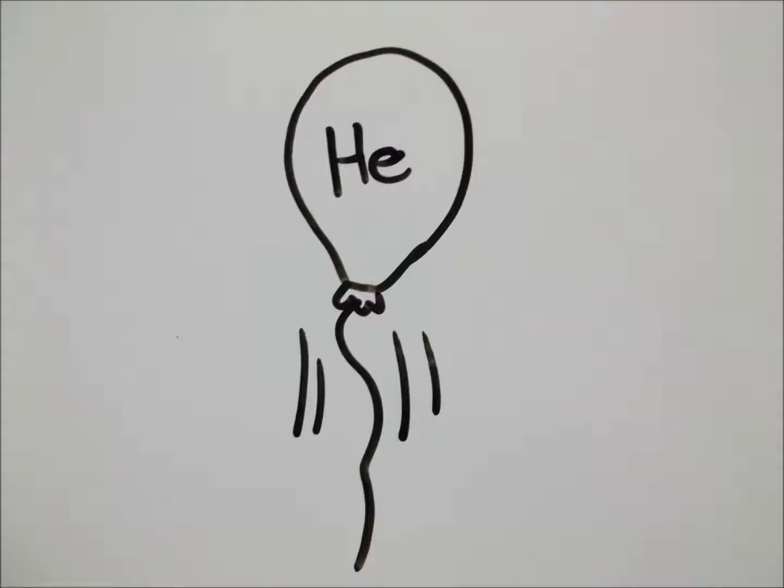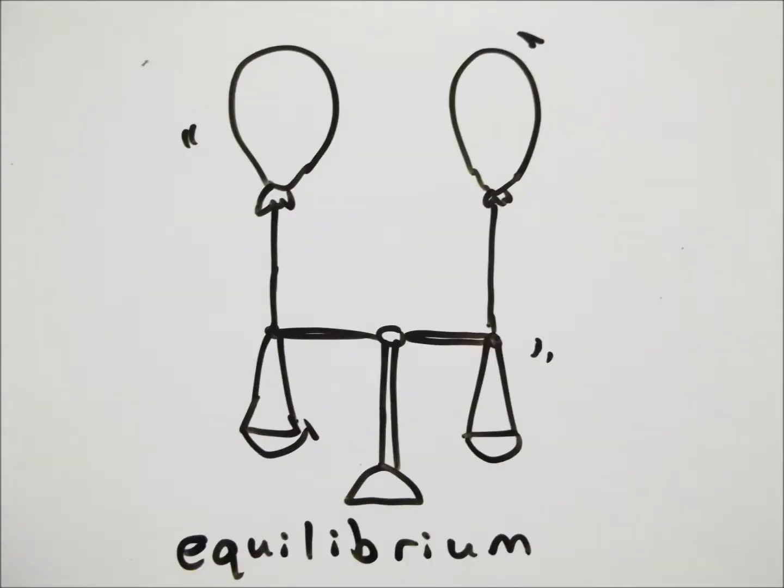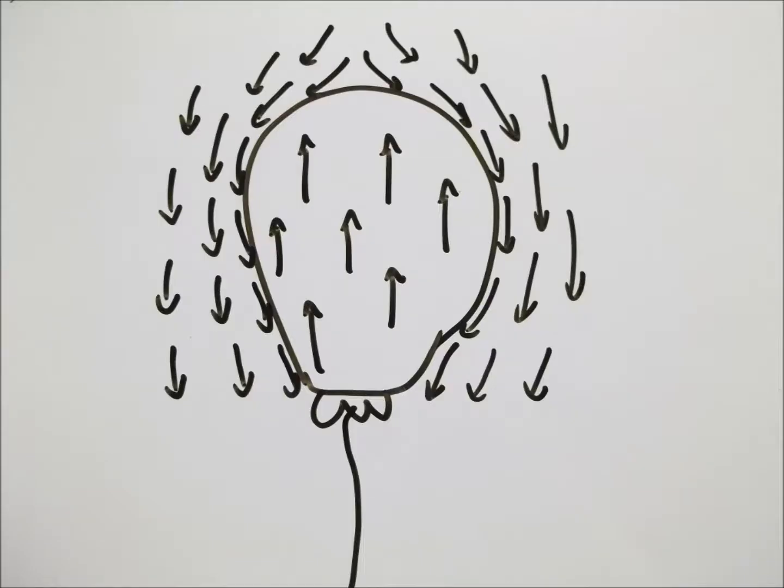To even begin to answer this question, we have to first understand what it is about helium balloons that makes them ascend into the air. The answer is that helium as a gas has less density than the air outside, and because the law of the land, or in this case the air, is all about equilibrium, the balloon will continue to rise because the air outside is trying to make the density inside the same as outside.